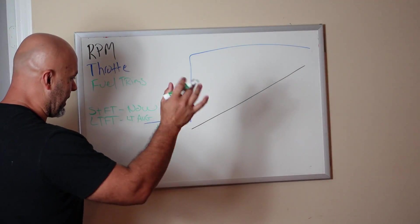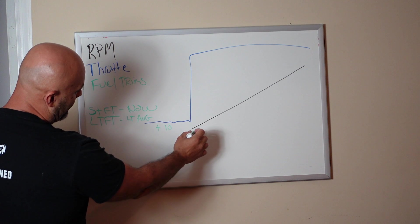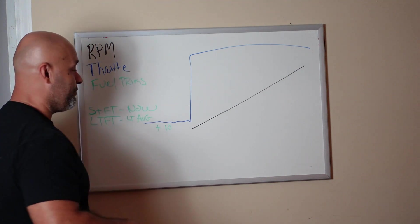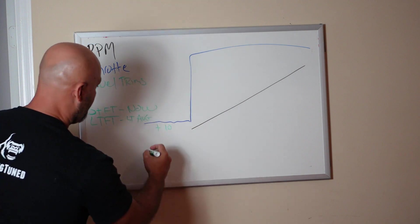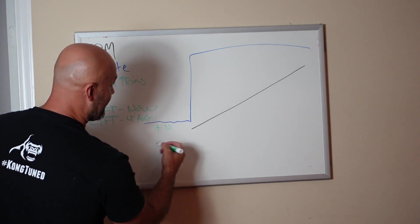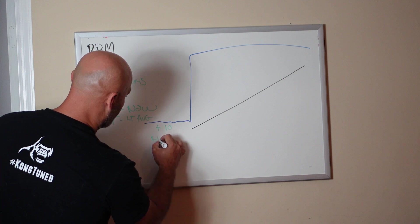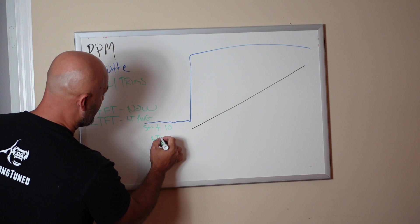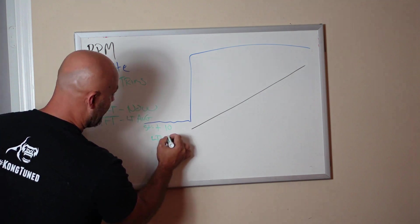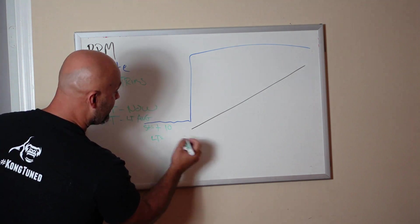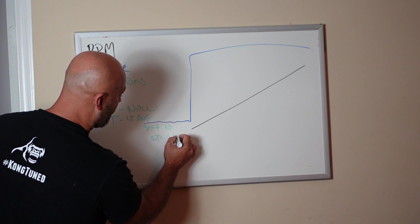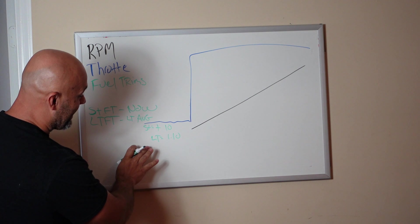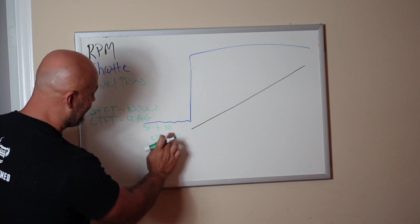If at idle your fuel trims are plus 10 and you're there for a while, then after two or three days your long trims will eventually start showing plus 10. The way you see it on the data log is 1.10, so 10% over.